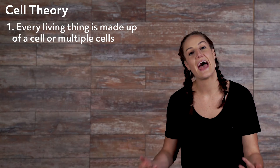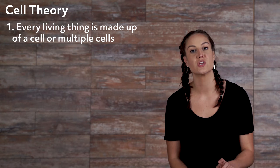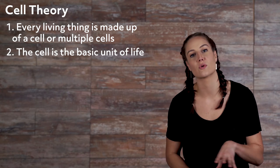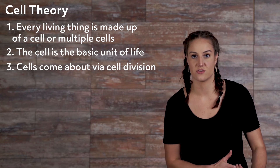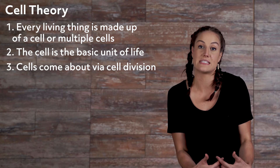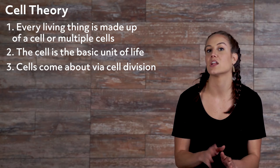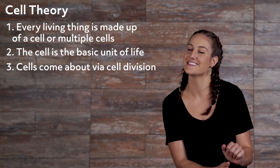The cell theory historically contains three sub-theorems: 1. Every living thing is made up of a cell or multiple cells. 2. The cell is the basic unit of life. 3. Cells come about via cell division, so there must be an already existing cell for a new cell to come about. The modern version of cell theory has added three more sub-theorems to the existing three, making six.